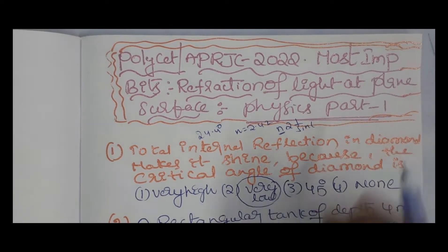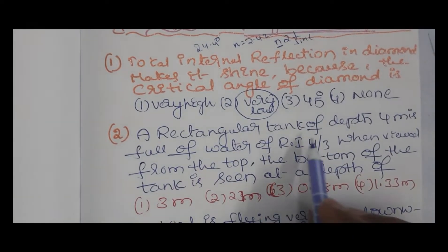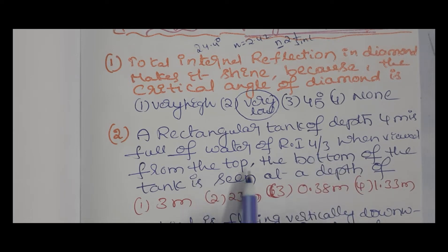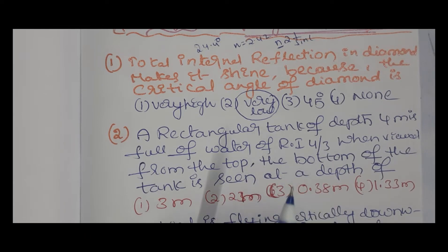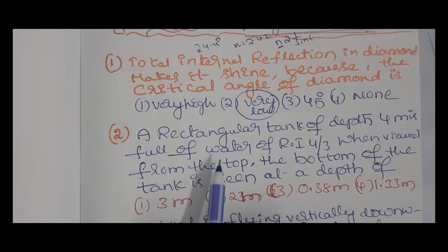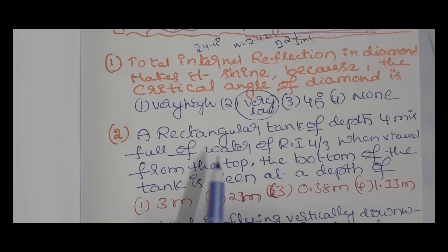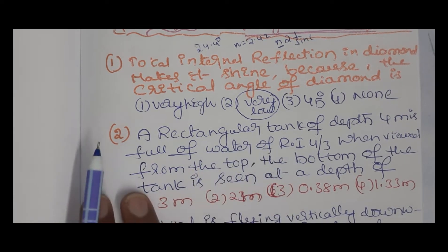Next question: a rectangular tank of depth 4 meters is full of water with refractive index 4/3. When viewed from the top, the bottom of the tank is seen at a depth of — you can see this problem. This type of model definitely has one question in Polyset and APRGC. Most important, guaranteed question on this model.